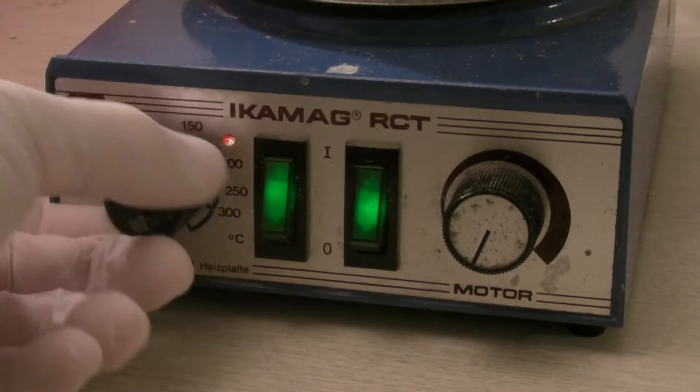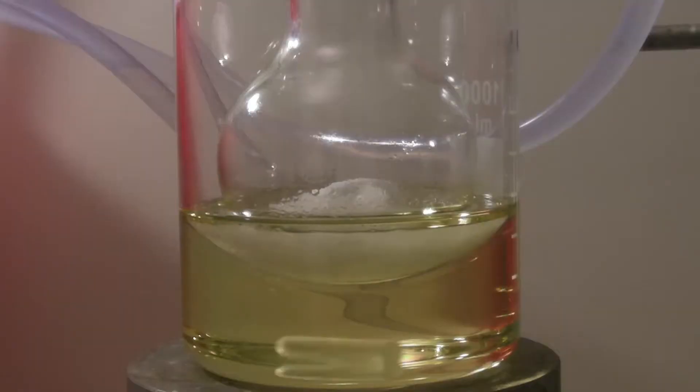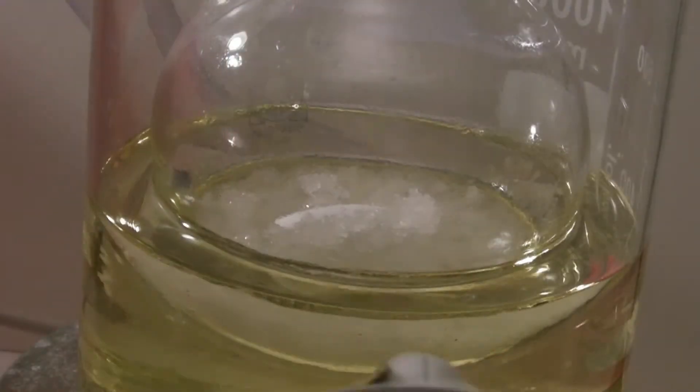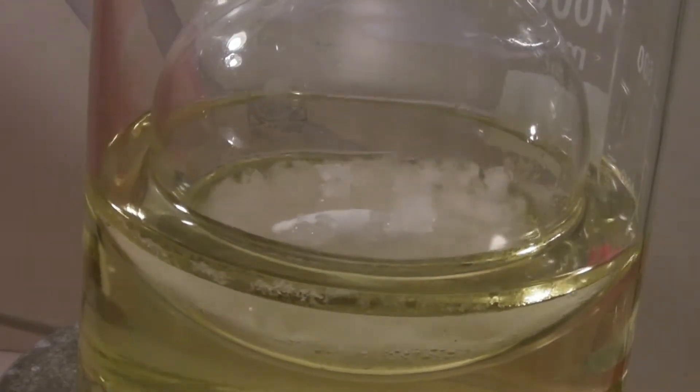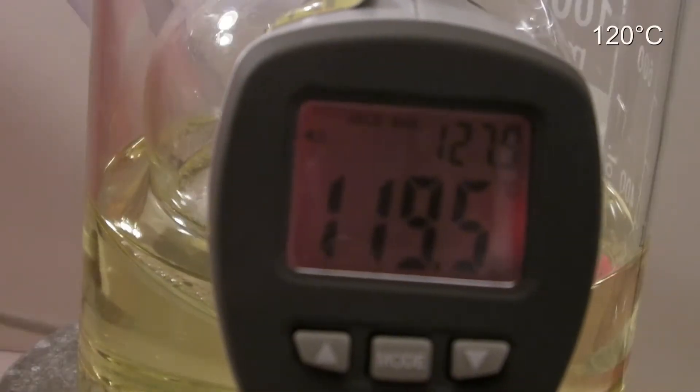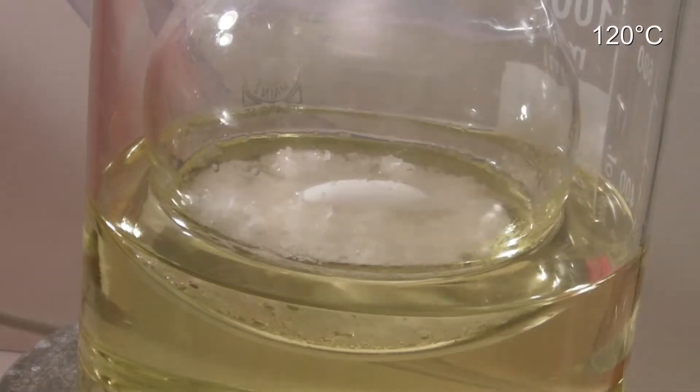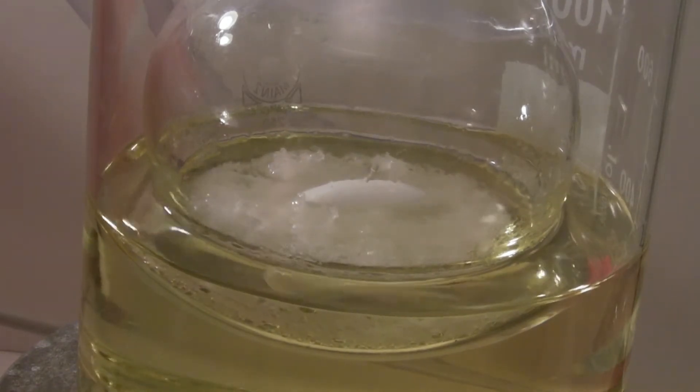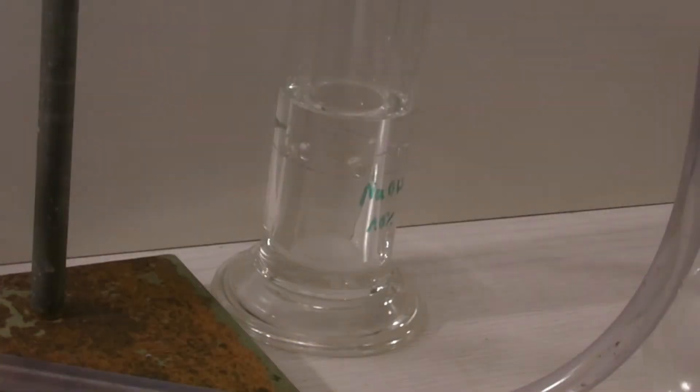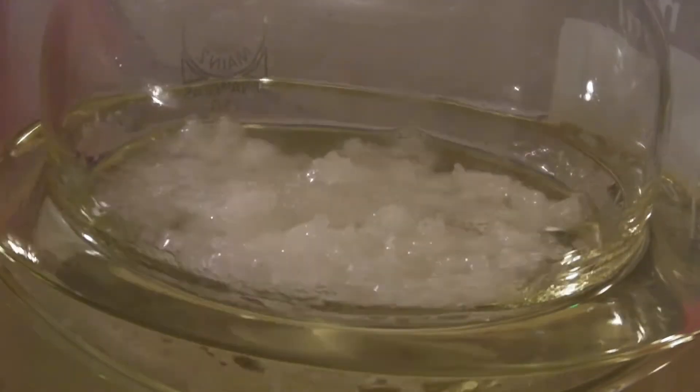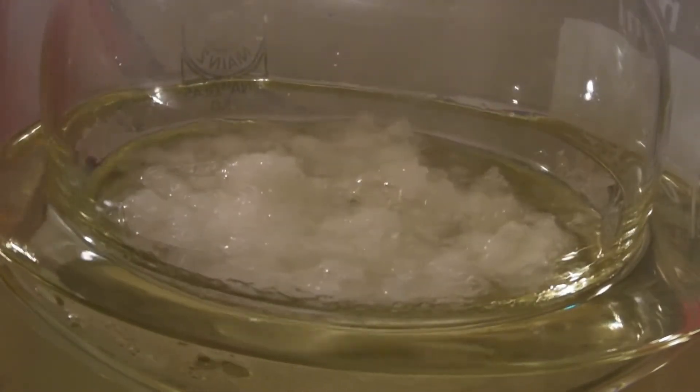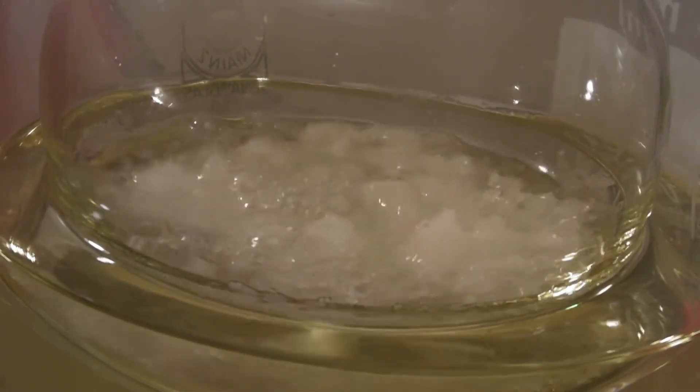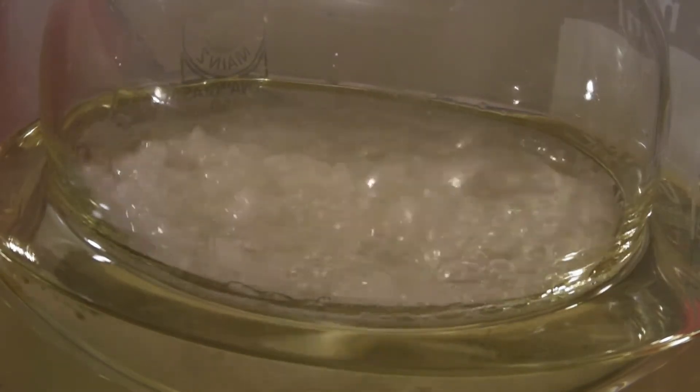At the beginning, the temperature of the hot plate was turned to its maximum to heat the oil bath as fast as possible. The oil bath was heated up to 120 degrees C and kept at this temperature. In the beginning, some nitrogen dioxide gas is formed, which then reacts with the sodium hydroxide solution in the gas washing flask. After a while, the mixture became liquid enough so that the stirring bar could move. This caused the mixture to boil vigorously.